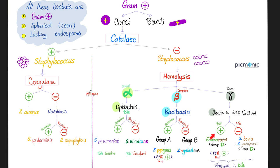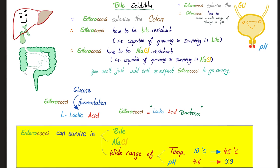Both of them can grow in bile, but only the Enterococcus can grow in 6.5% salt solution. Salt solution will kill and destroy the Streptococcus bovis. Enterococci are soluble in bile and can grow in many circumstances — bile, no problem; salt, bring it on. But Streptococcus bovis has left the chat.